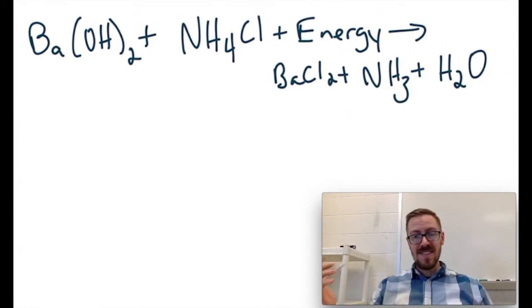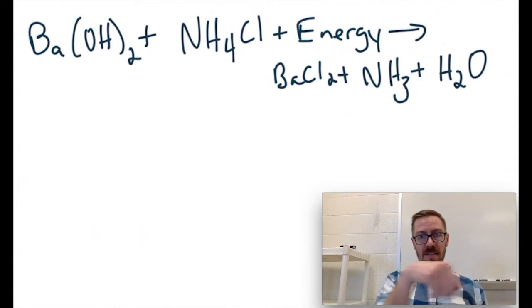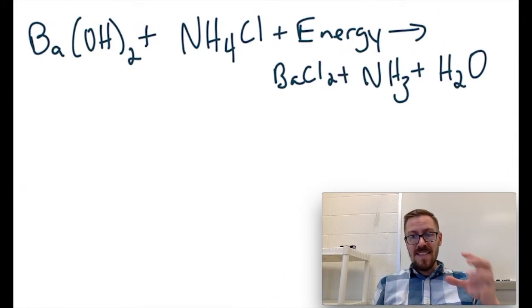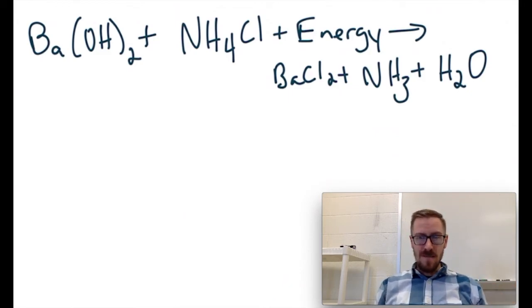So endothermic reactions take heat in, which usually makes the temperature go down. There's a reaction that we might do in class, where you take barium hydroxide and ammonium chloride, mix them together, and it gets so cold that if you have it on a plank of wood with like a little drop of water underneath it, it'll actually freeze it to the wood. And I've put a video up for that in Schoology as well.